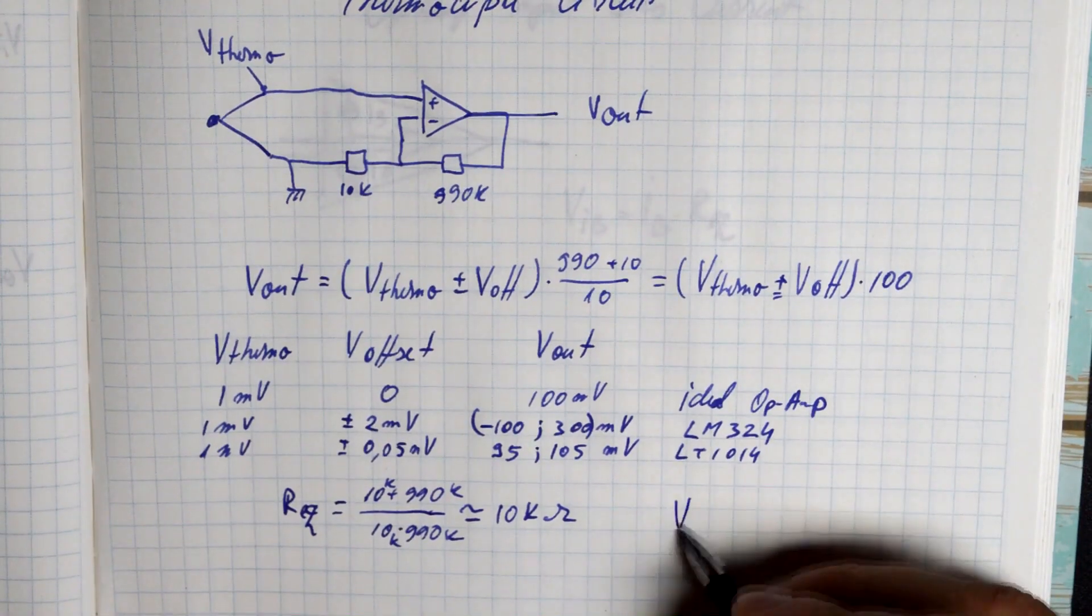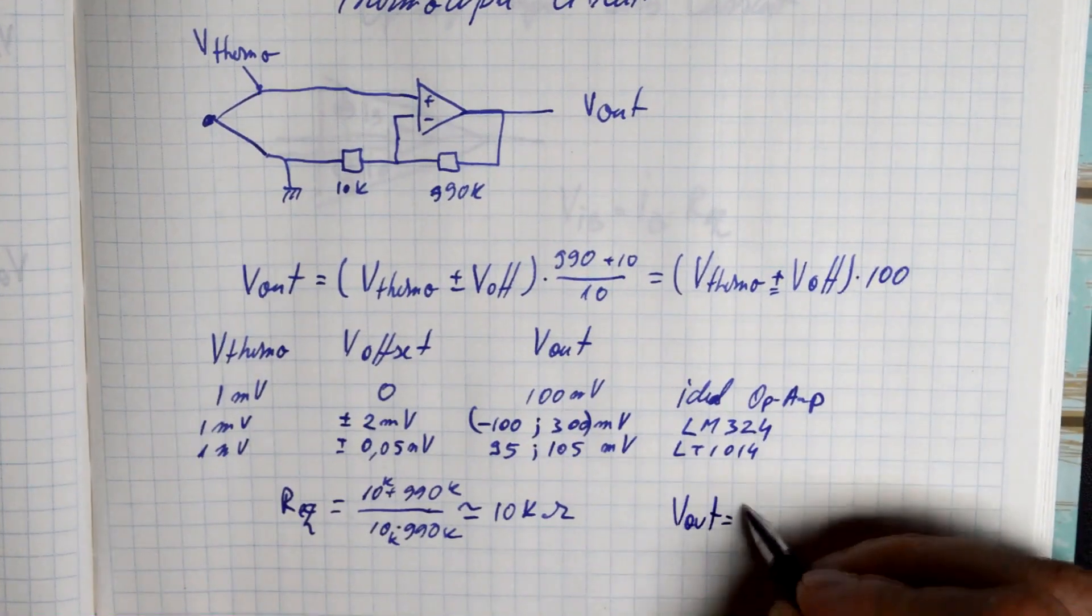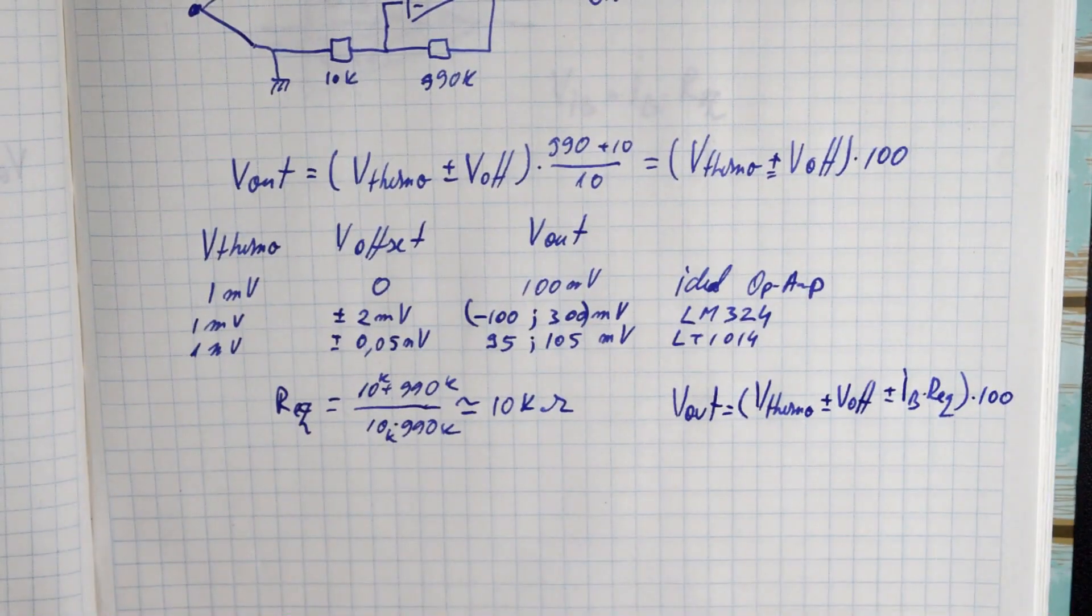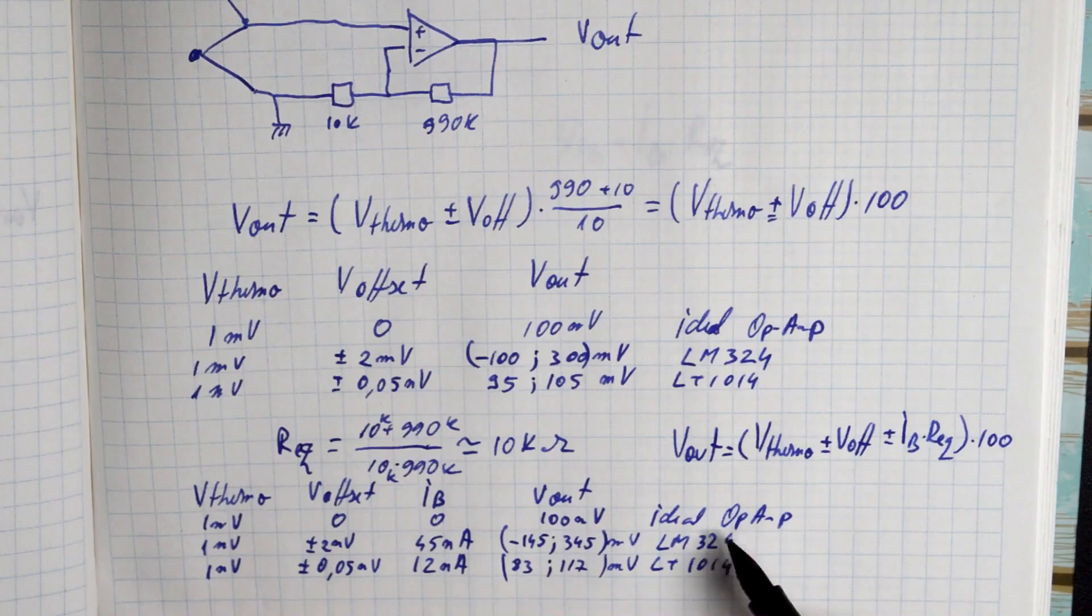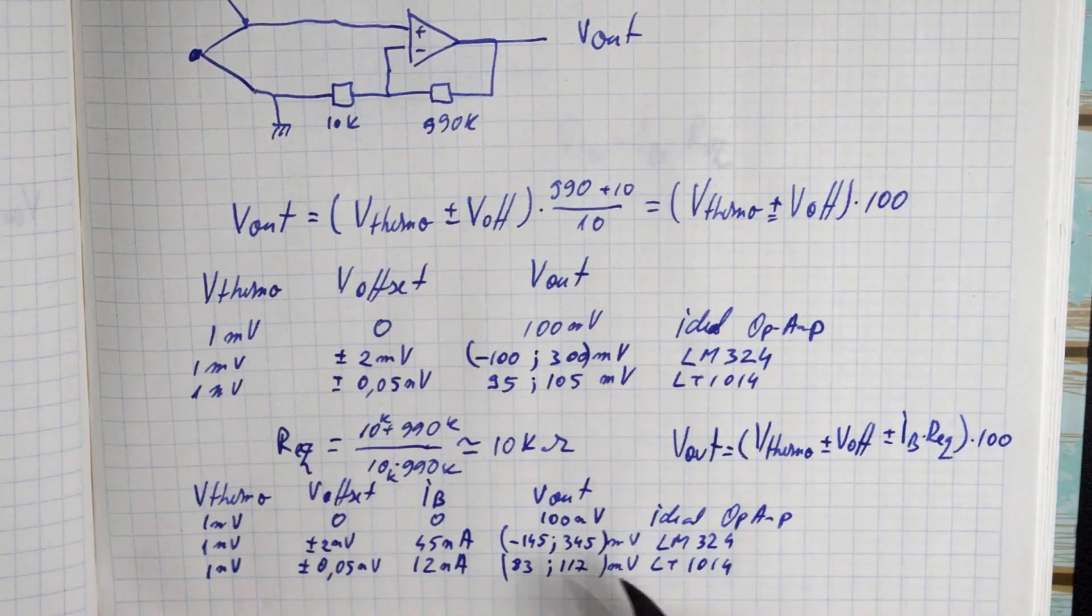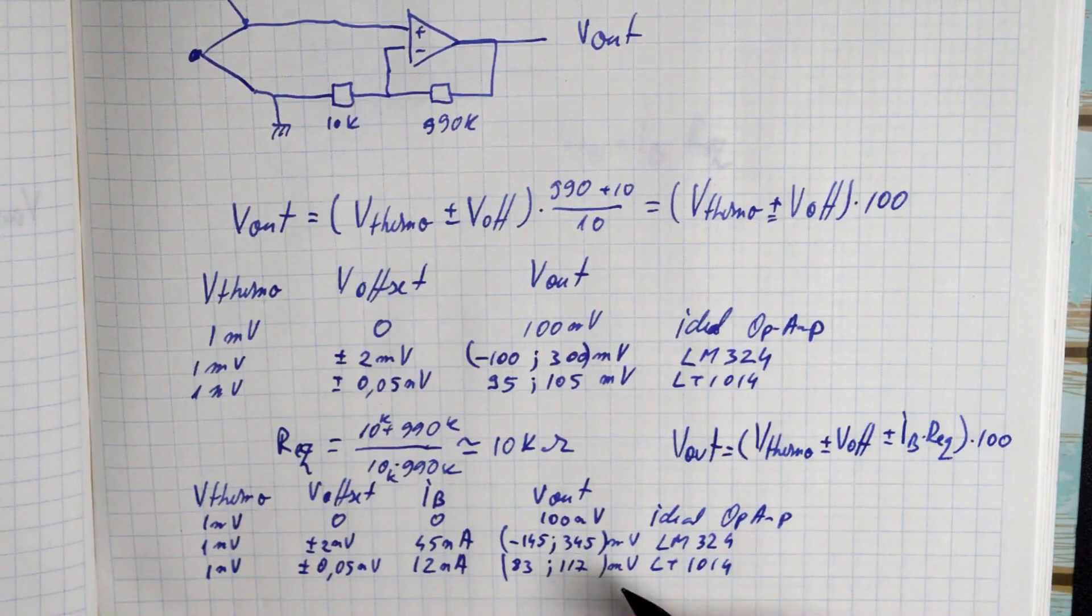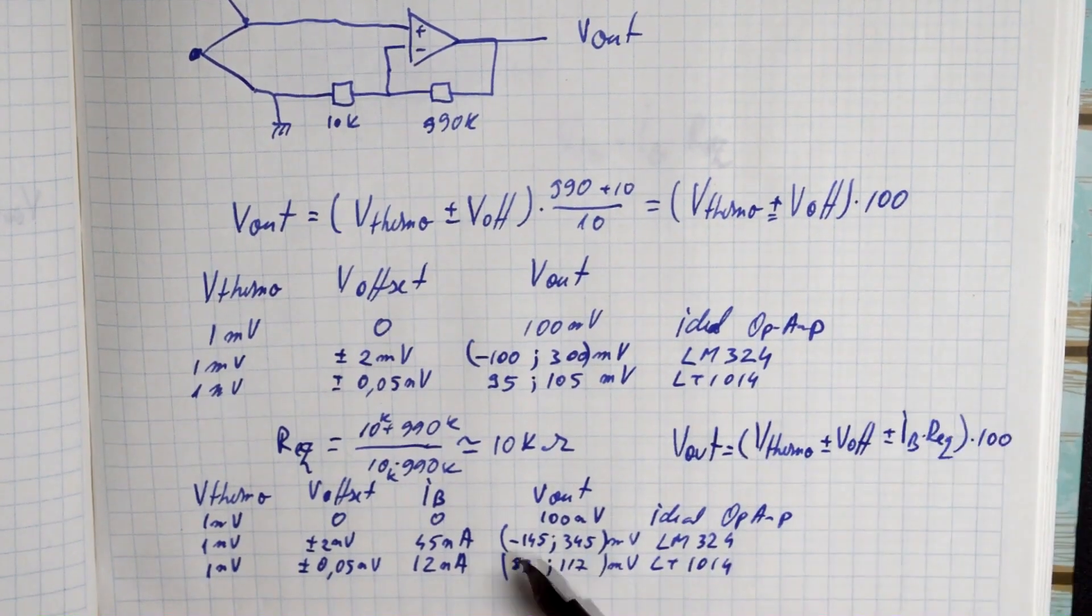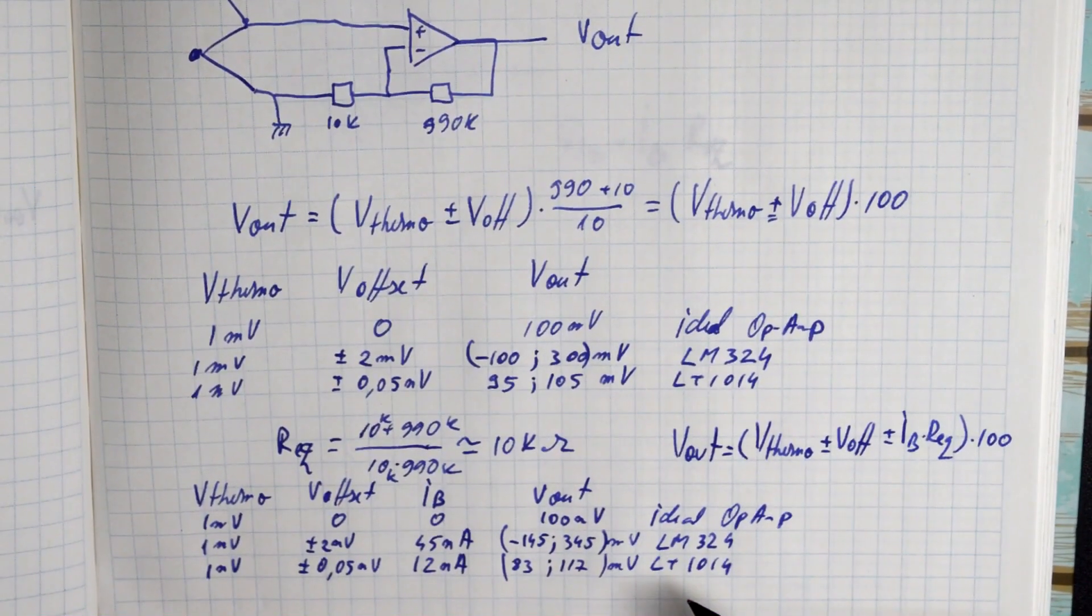This will be the two resistances in parallel, which is roughly equal to 10 kilo-ohms. Now since our extra offset caused by the bias current is this equivalent resistance times the bias current, we can work out what our output voltage will be if we take into account both our initial offset and the offset caused by our equivalent resistance. The total output voltage will look something like this. And if we apply this formula for the two op-amps, we're going to get the following values. So for the ideal op-amp, again, no influence as expected. There is no bias current. For our LM324, this bias current has a small influence, but compared to the initial offset, it's of little importance.